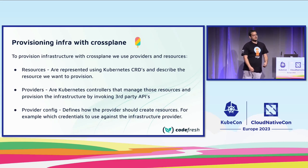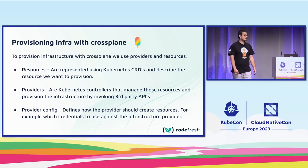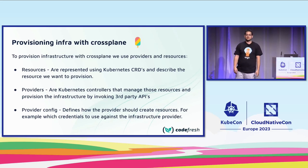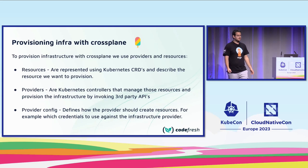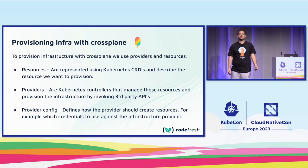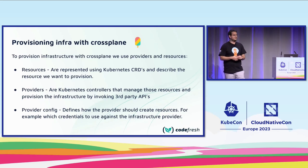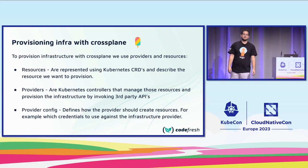How does Crossplane provision infrastructure? Crossplane uses providers and resources. Resources are represented using Kubernetes CRDs describing what we want to create — for example, if we want to create an AWS VPC we'd have a spec with CIDR blocks. Providers are the actual Kubernetes controllers responsible for creating those resources on third-party APIs. For AWS we use the AWS provider. Provider configs define how the provider should create resources, for example referencing a secret that authenticates against AWS.